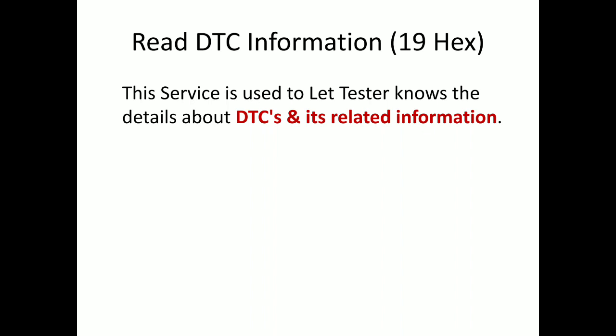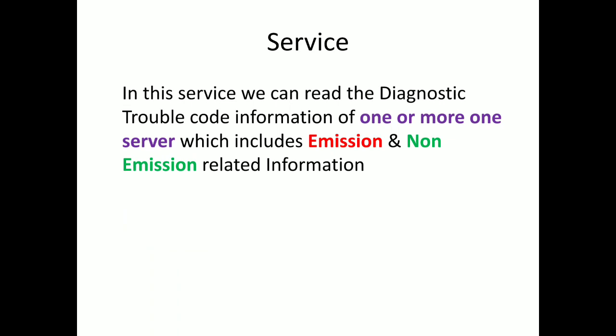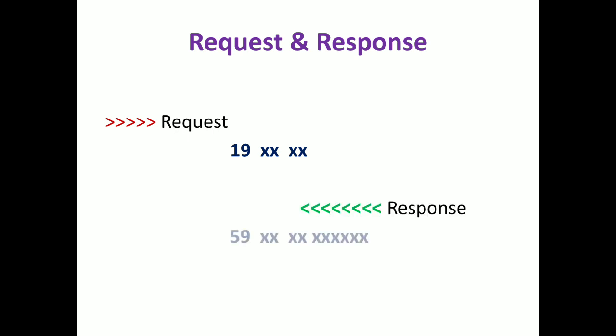In other words, this service will show you what faults are present in the ECU, along with other related information. Using this service, we can read the DTC information from not only one but also more than one server, including emission as well as non-emission related information. The request frame is 19 with the sub-function and status mask; the response is 59 with the sub-function and other parameters.